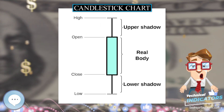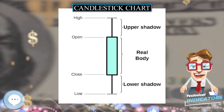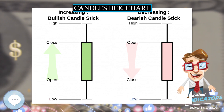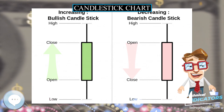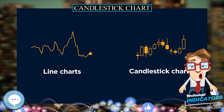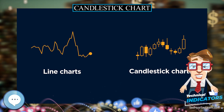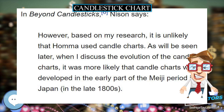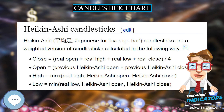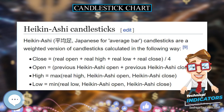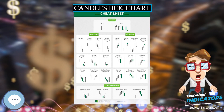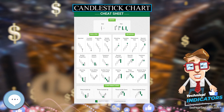Rather than using the open, high, low, and close values for a given time interval, candlesticks can also be constructed using the open, high, low, and close of a specified volume range — for example, 1,000, 100,000, or 1 million shares per candlestick. In modern charting software, volume can be incorporated into candlestick charts by increasing or decreasing candlestick width according to the relative volume for a given time period.